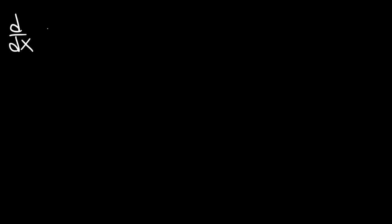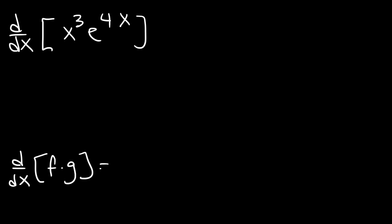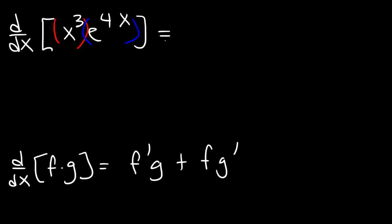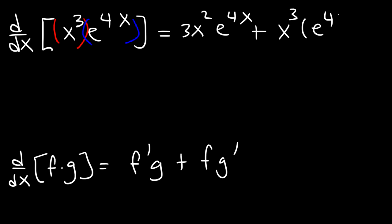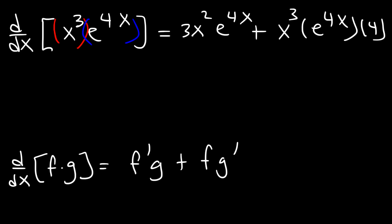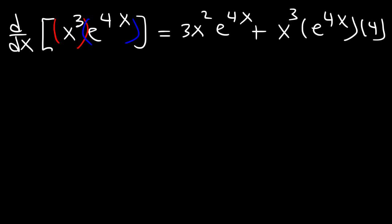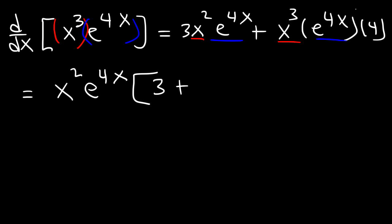Let's work on some harder problems that involve more steps. What is the derivative of x cubed times e to the 4x? For this problem, we need to use the product rule: the derivative of f times g is f prime g plus f g prime. So f is x cubed and g is e to the 4x. So f prime is 3x squared times g, which is e to the 4x, plus f — that's x cubed — times g prime. The derivative of e to the 4x is e to the 4x times the derivative of 4x, which is 4. We can simplify by factoring out the GCF, x squared and e to the 4x, giving us x squared times e to the 4x times the quantity 3 plus 4x.